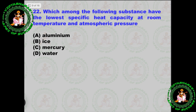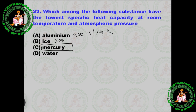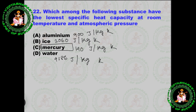Next question: Which among the following substances has the lowest specific heat capacity at room temperature and atmospheric pressure? The answer is mercury, with a value of 140 joules per kilogram-kelvin. For reference: aluminum is 900 J/kg·K, ice is 2060 J/kg·K, and water is 4186 J/kg·K.